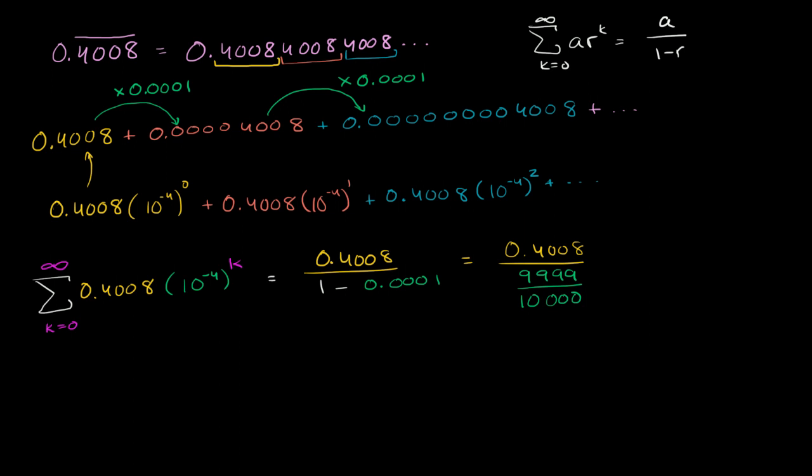Once again, you could view, let me write this out. 1 is the same thing as 10,000 over 10,000, and you're subtracting 1 over 10,000, and so you're going to get 9,999 over 10,000.